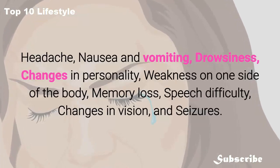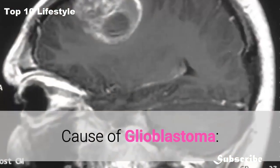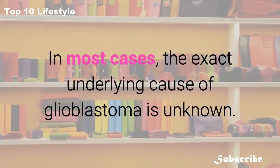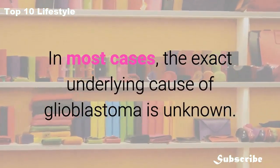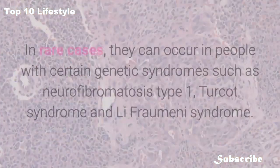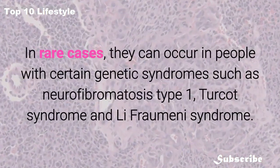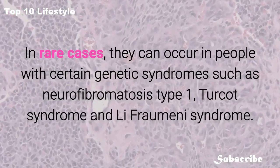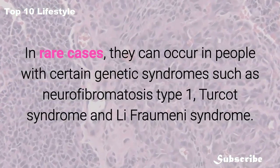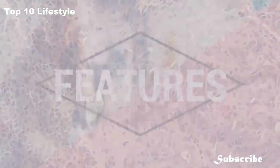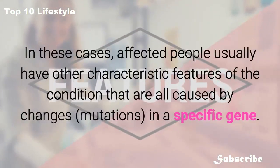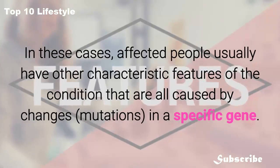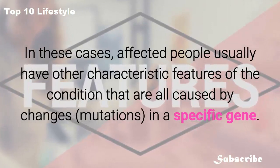In most cases, the exact underlying cause of glioblastoma is unknown. In rare cases, it can occur in people with certain genetic syndromes such as neurofibromatosis type 1, Turcot syndrome, and Li-Fraumeni syndrome. In these cases, affected people usually have other characteristic features caused by changes — mutations — in a specific gene.